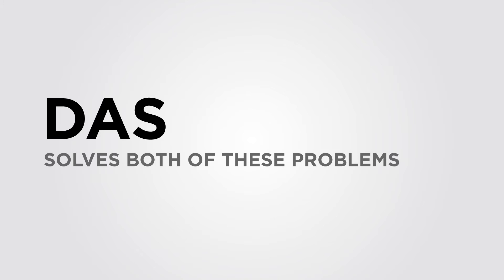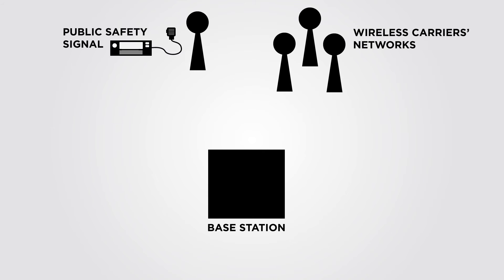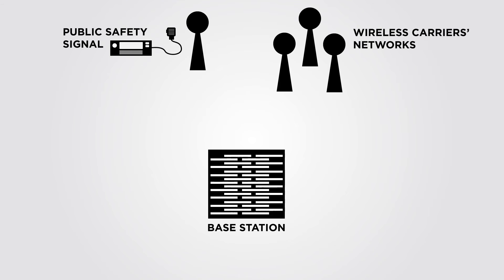DAS offers a solution to these problems. It begins with one or more donor antennas taking the signal to a base station. This base station collects signals from the various wireless carriers' networks. The base station also grabs the signal of the public safety radio system from the nearest repeater for that area.